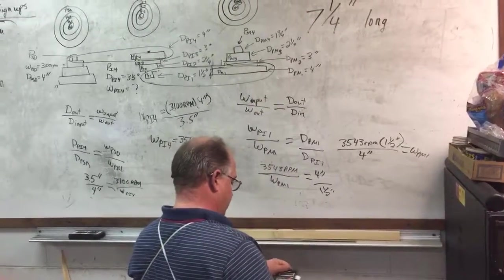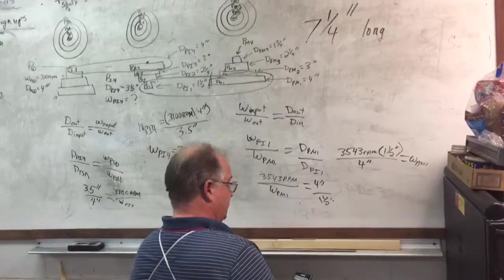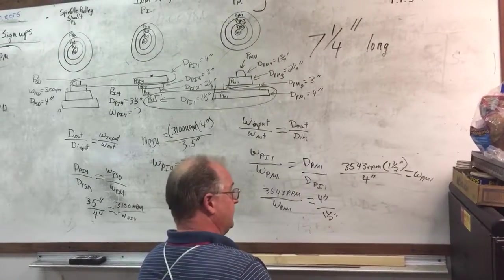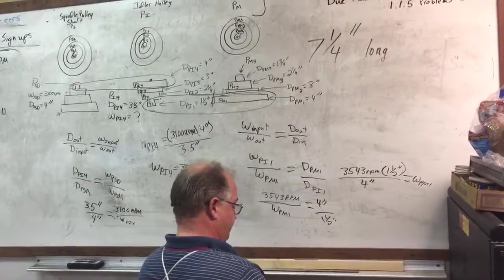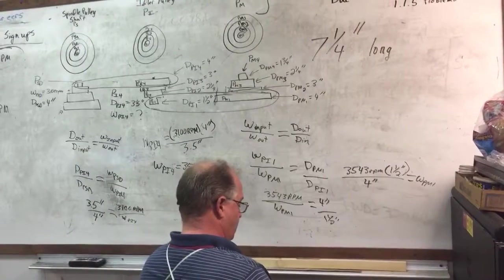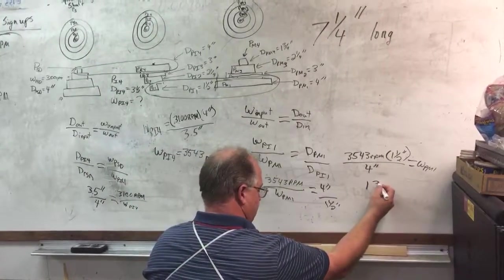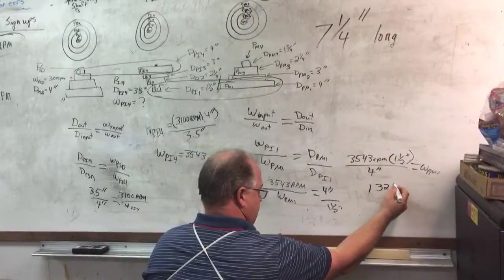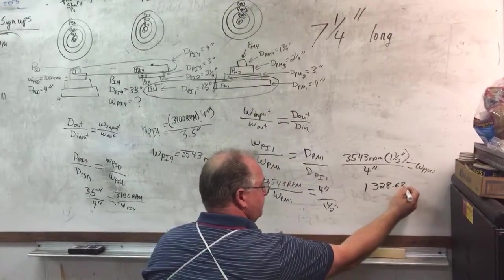And let me get my calculator out real quick. 3,543 times 1.5 divided by 4 equals 1,328.625.